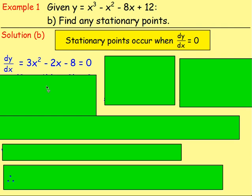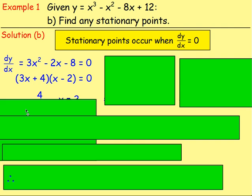How would you work out the values of x? Brilliant. Well done. You'd factorize that. So if you factorize, you get 3x plus 4, bracket x minus 2. Set each bracket equal to 0. Solve for x and x would be negative 4 thirds or x equals 2.